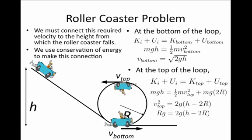If we insert an expression for what v_top must be in order to keep a normal force acting on the cart, we can find that v_top squared is Rg. And we set that equal to 2g(h - 2R). We wanted to know initially, how high of a ramp do we need to send this roller coaster down? And we find that 5R equals 2h, or h is 5/2 R.